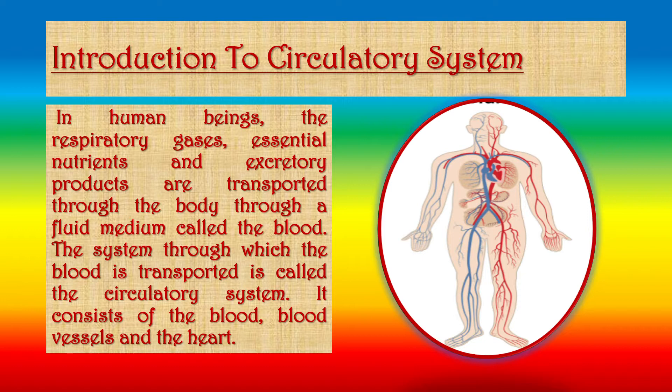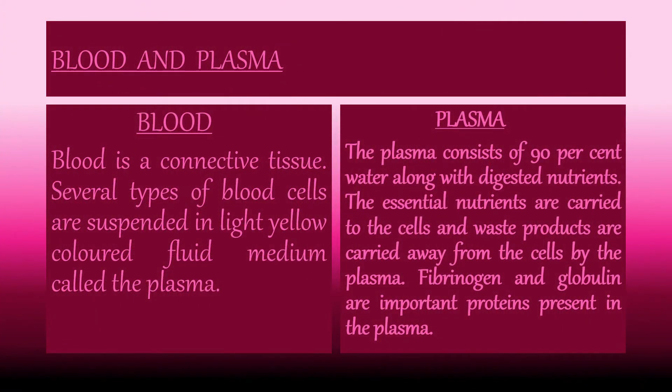It consists of the blood, blood vessels and the heart. Blood is a connective tissue. Several types of blood cells are suspended in a light yellow colored fluid medium called the plasma. The plasma consists of 90% water along with digested nutrients. The essential nutrients are carried to the cells and waste products are carried away from the cells by the plasma. Fibrinogen and globulin are important proteins present in the plasma.